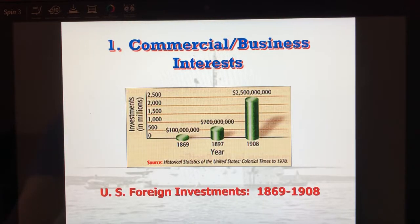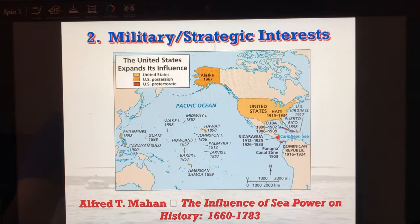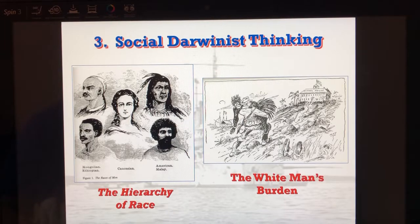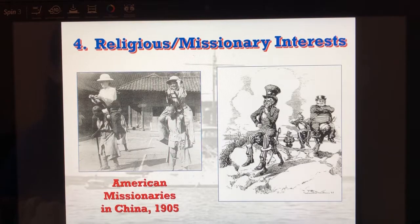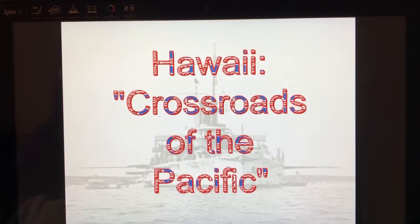Why did we join the imperialist club? We talked about businesses wanting to get new resources and new markets to sell to, so we're going to see trade increase in America. Military reasons — we needed coaling stations and to protect our new interests around the globe. We saw in the Gilded Age social Darwinism, and white man's burden — that we need to go into these areas. We saw religious missionary zeal — that we needed to go in and teach religion. The last thing is that manifest destiny is over; we're not trying to conquer these areas and make them states, but they're territories that will give us resources.